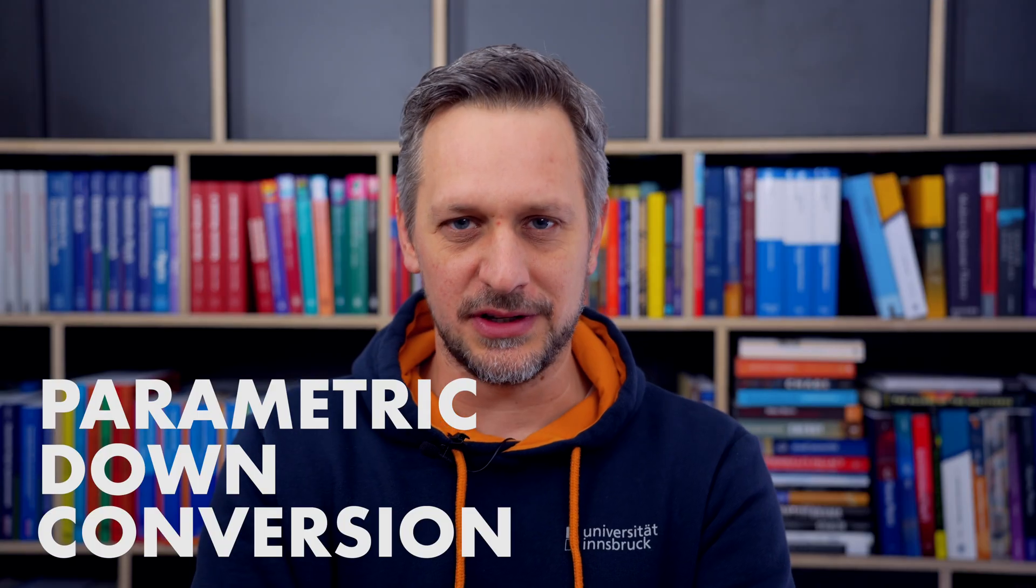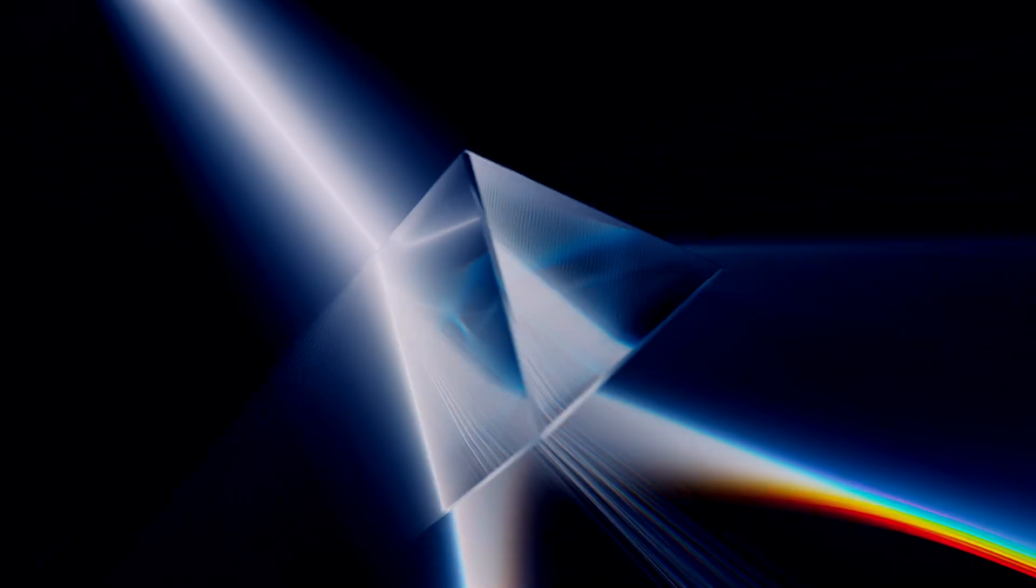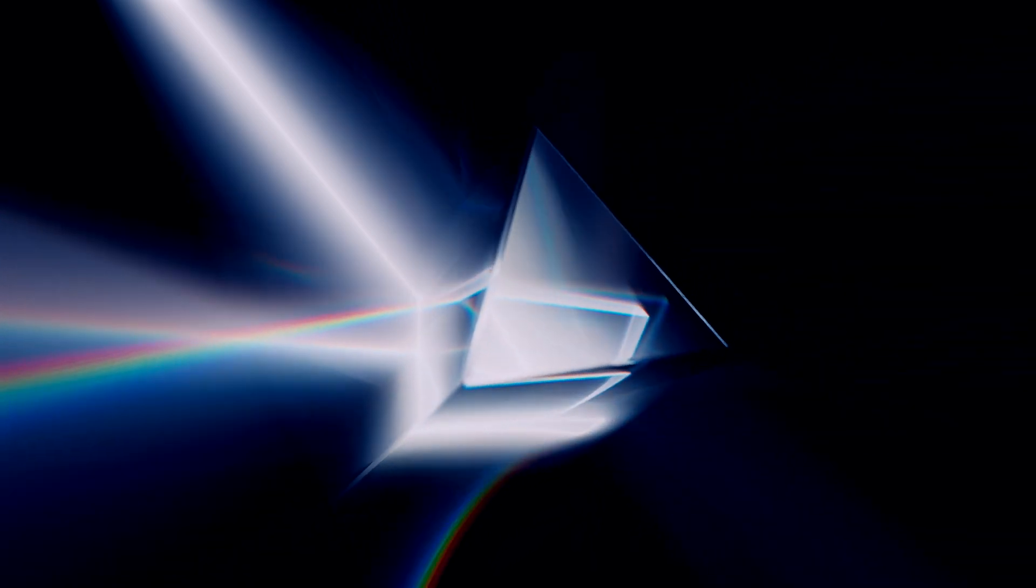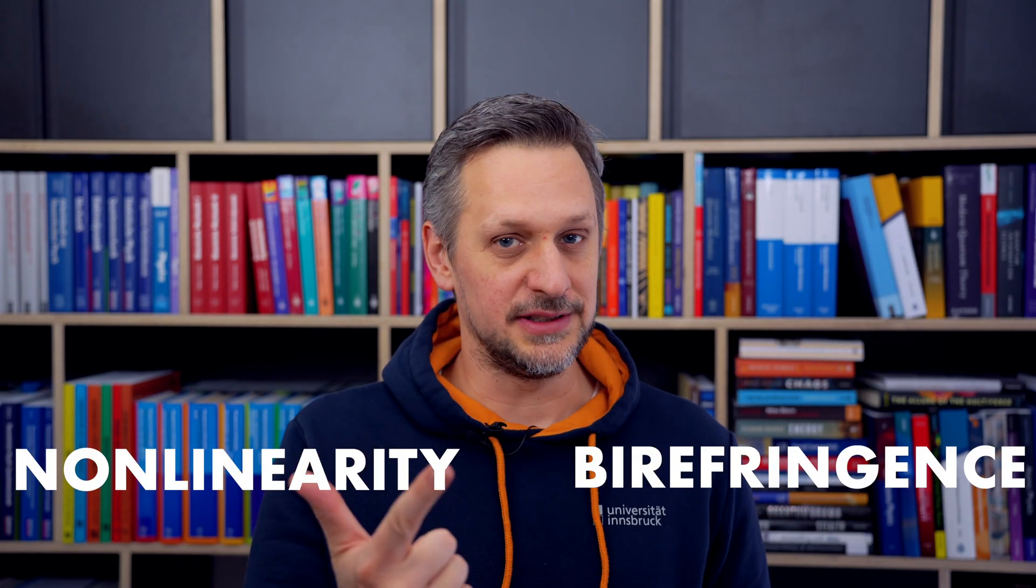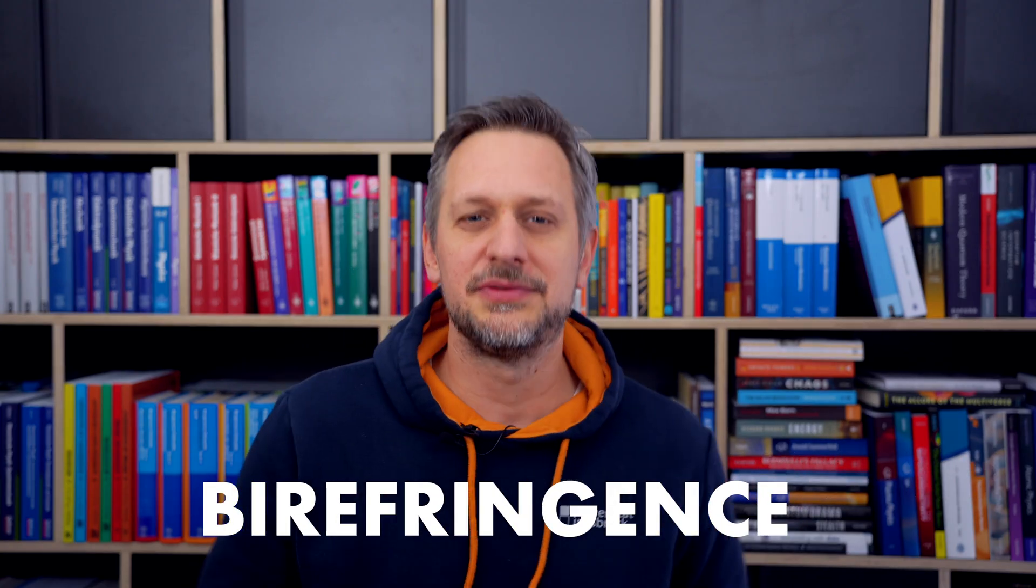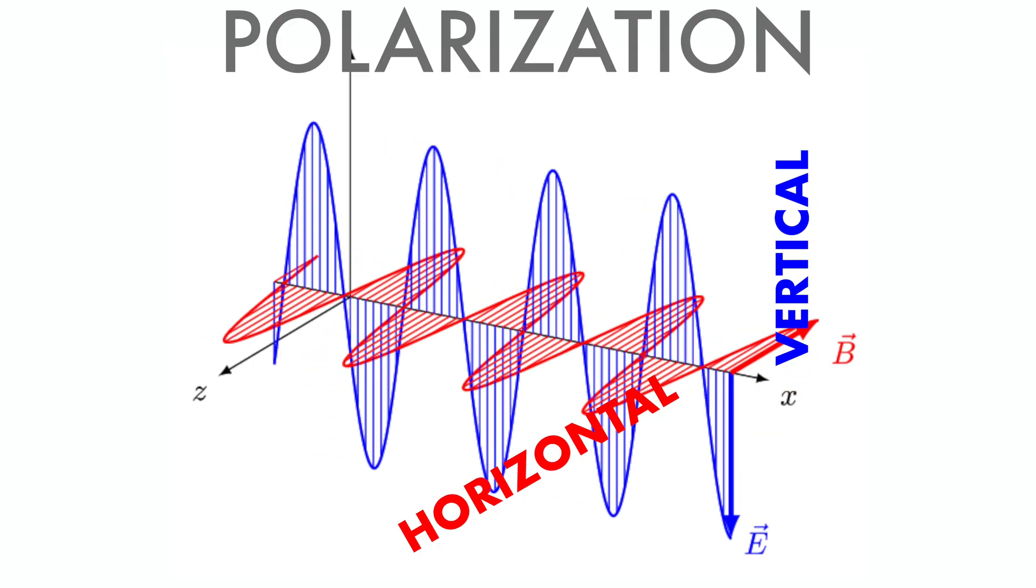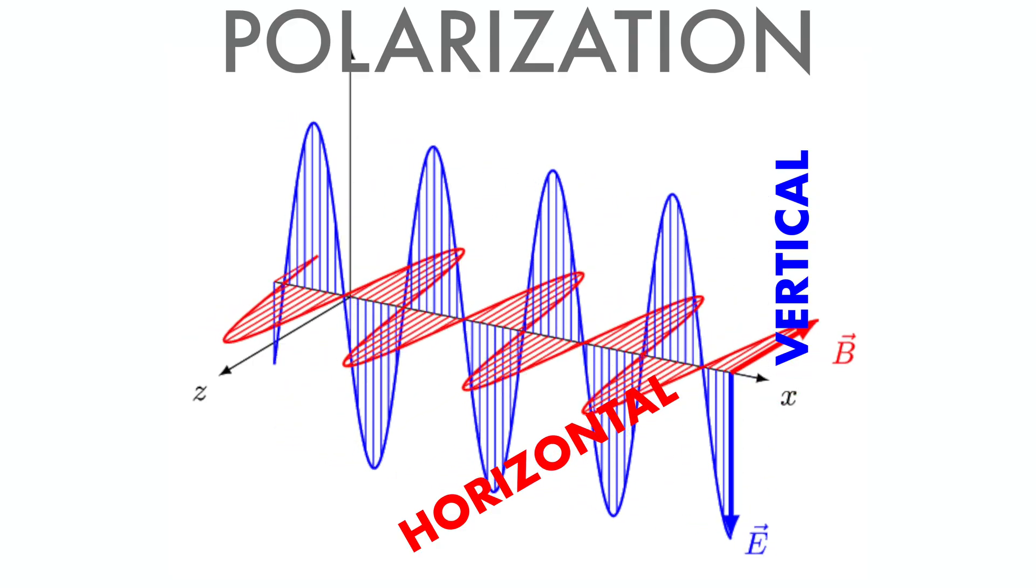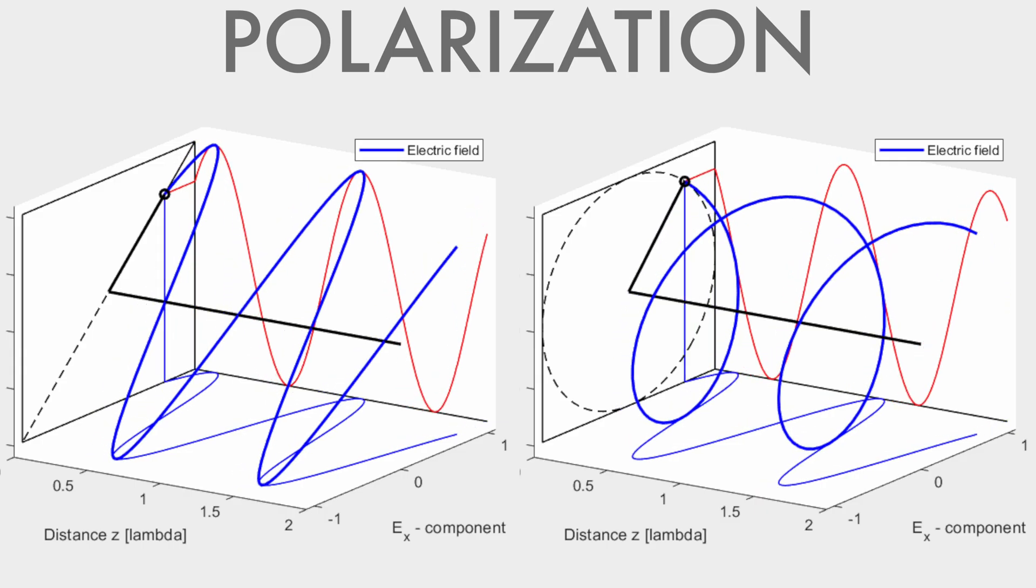A much more practical way to create entanglement is parametric downconversion. But to talk about that, we first have to talk about optical crystals. Everyone knows how glass interacts with light, but different crystals can have unusual optical properties, depending on their molecular structure. And we will need two of those properties: non-linearity and birefringence. Birefringence means that a crystal has two different refractive indices for the two different polarizations of light. In simplified terms, polarization is the direction in which a light wave is oscillating.